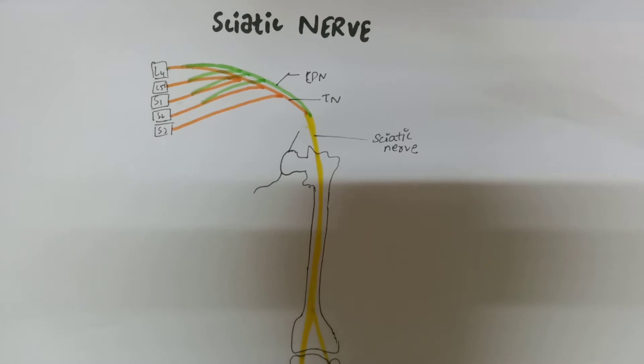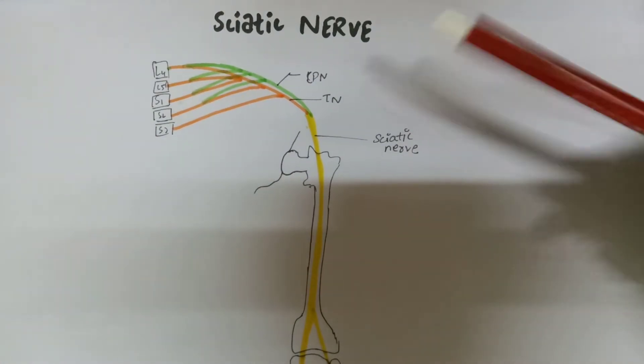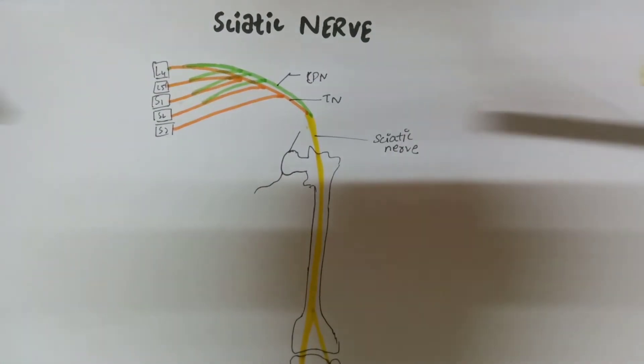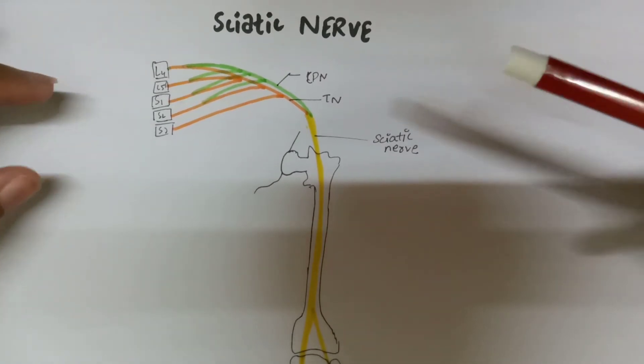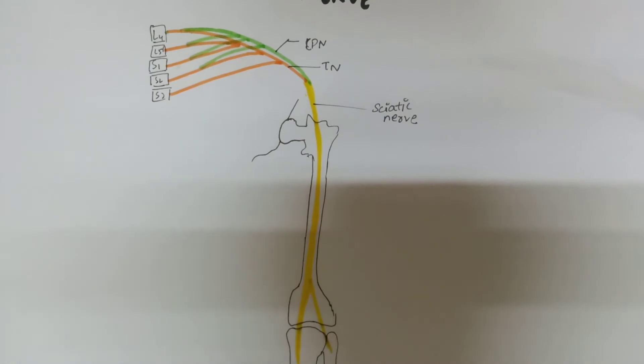Today I will tell you about the sciatic nerve. Sciatic nerve basically arises as a combination of two nerves: common peroneal nerve and the tibial nerve, which arises from the sacral plexus. Sciatic nerve is quite simple; there is nothing complicated about it.